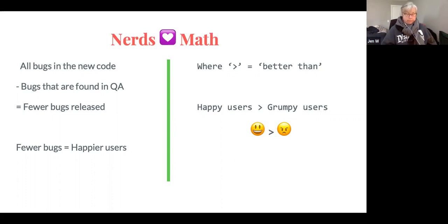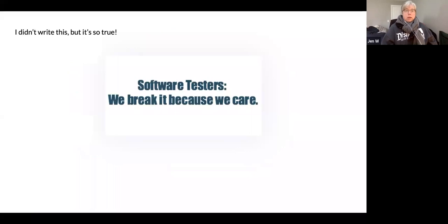So all bugs in the new code that we just finished writing minus the bugs that are found in QA equals fewer bugs released, fewer bugs, happier users, happier users better than grumpy users. So it's like a win-win all the way around. Plus it's very, very fun. I didn't write this, as I said, but I, it's really, I find bugs because I care. It just says it all.